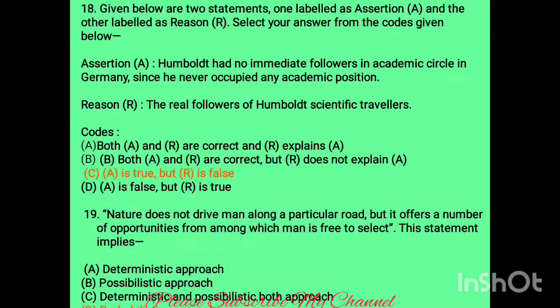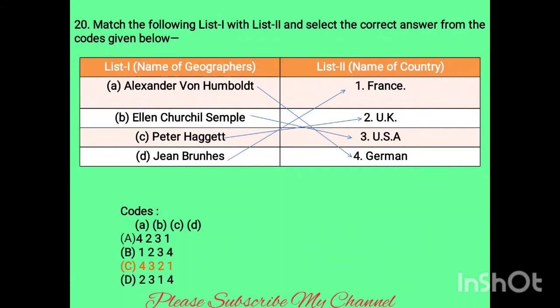Question eighteen is an assertion-reason question. Assertion: Humboldt had no immediate followers in academic circles in Germany since he had never occupied any academic position — this is absolutely true. Reason: the real followers of Humboldt were scientific travellers — this is wrong. So the answer is option C. Question nineteen: 'Nature does not drive man along a particular road but offers a number of opportunities from among which man is free to select.' This represents the possibilistic approach — nature gives opportunities and man is free to select.